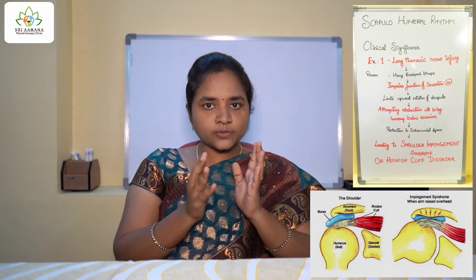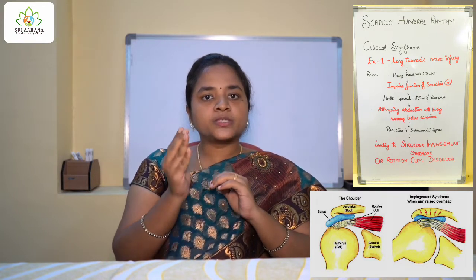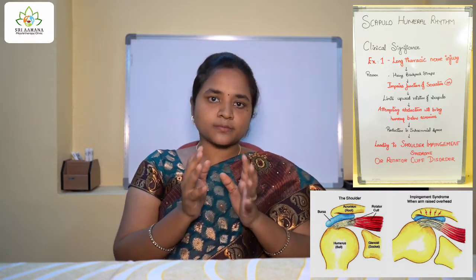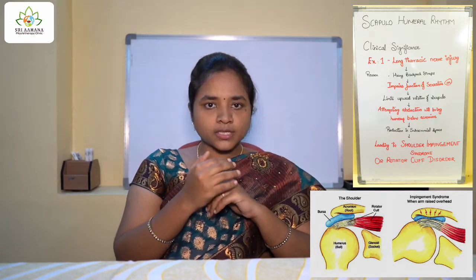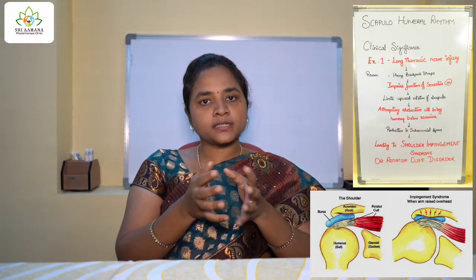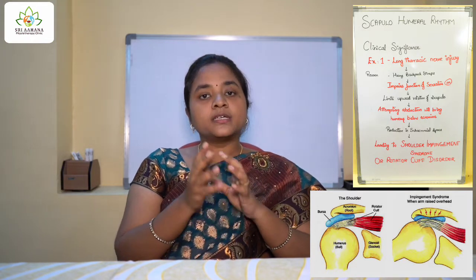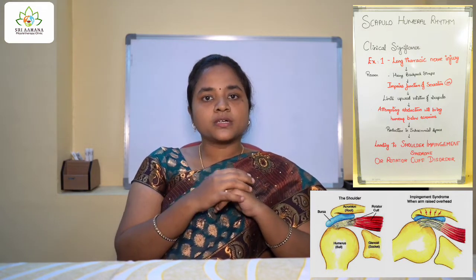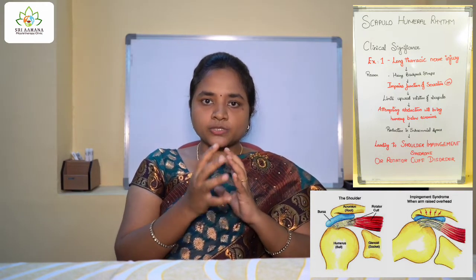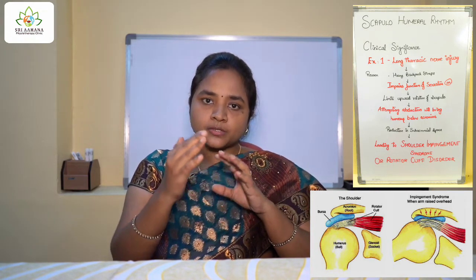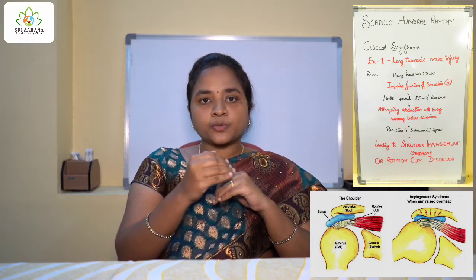When there is an injury to the long thoracic nerve, which innervates the serratus anterior muscle, it will impair its function. As mentioned earlier, the function of the serratus anterior muscle is to provide upward rotation of the scapula. So when this nerve is injured, this muscle loses its function, and the upward rotation of the scapula is restricted.